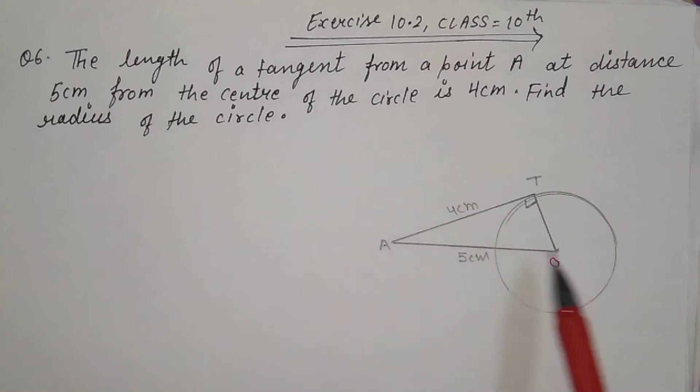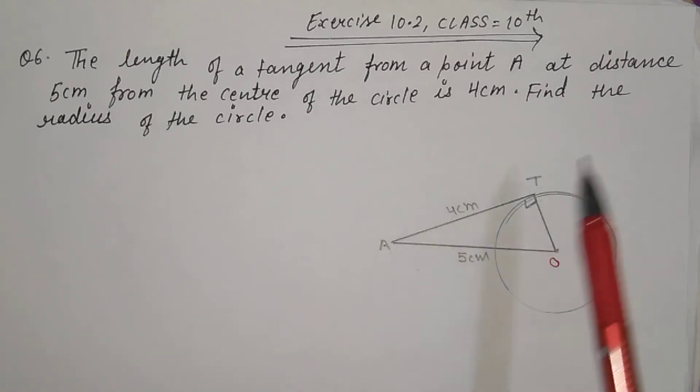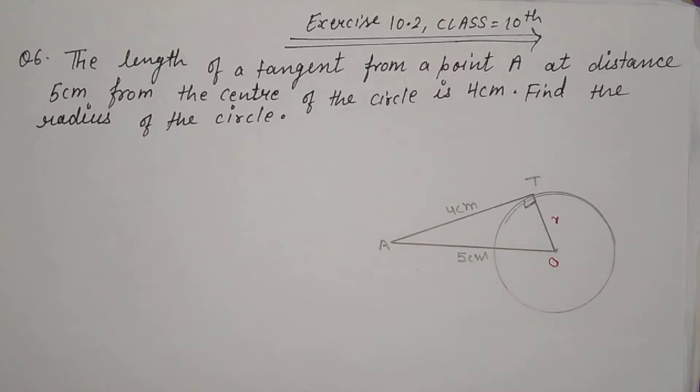You have given AO is 5 cm, AT is 4 cm. You have to tell the radius of the circle. This one is the radius of the circle.